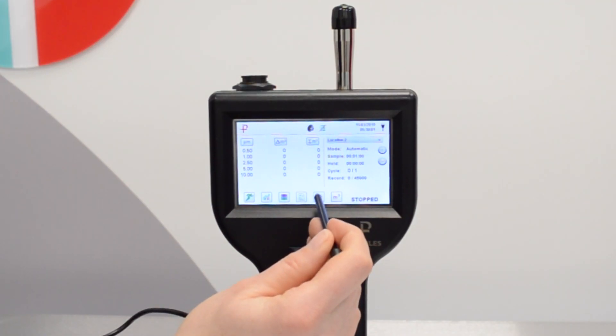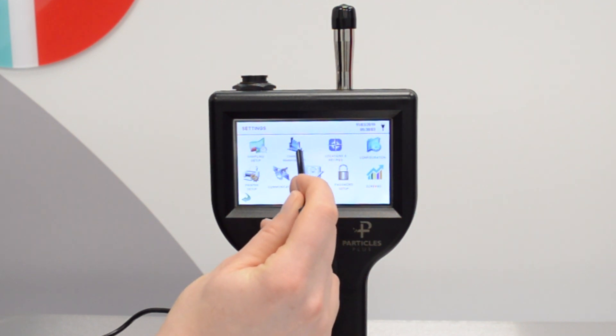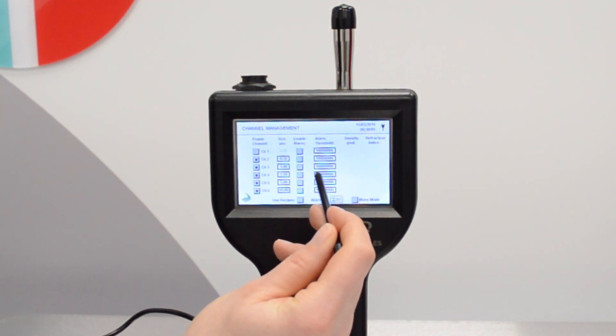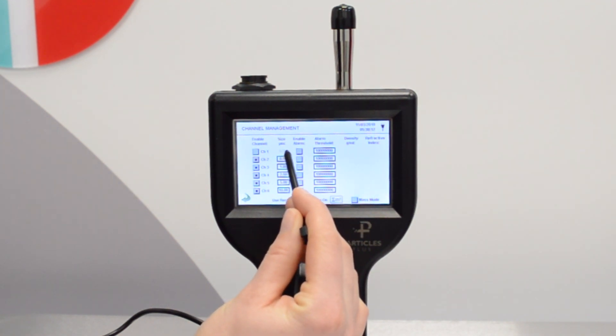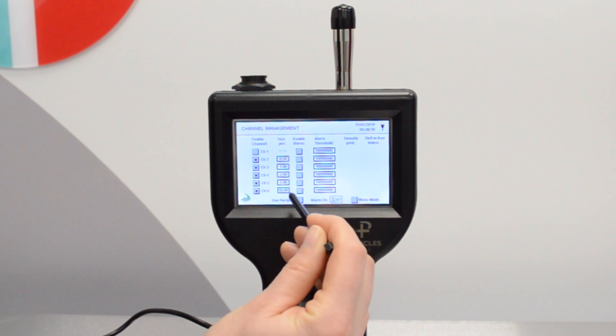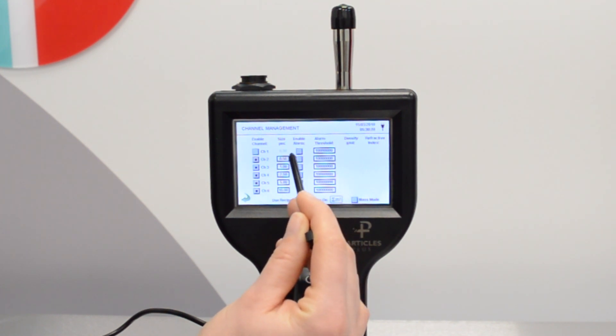From the home screen if you tap on settings you can change the channel size and turn channels on and off. You can't edit the first one as that is fixed to 0.3, but you can change other sizes of the other five channels. The range is from 0.3 to 10 and we'd recommend using channel sizes that are aligned with the ISO standard.